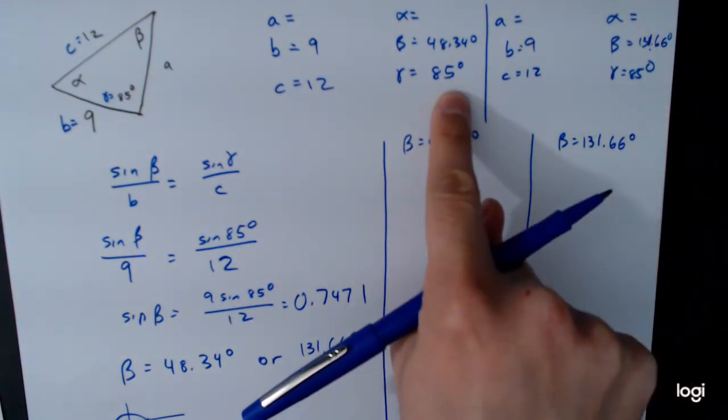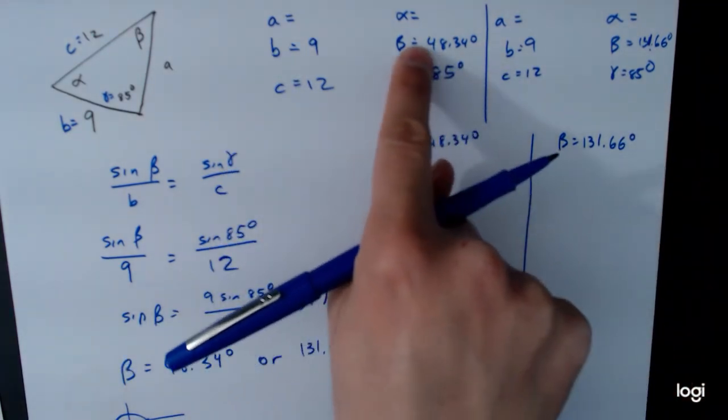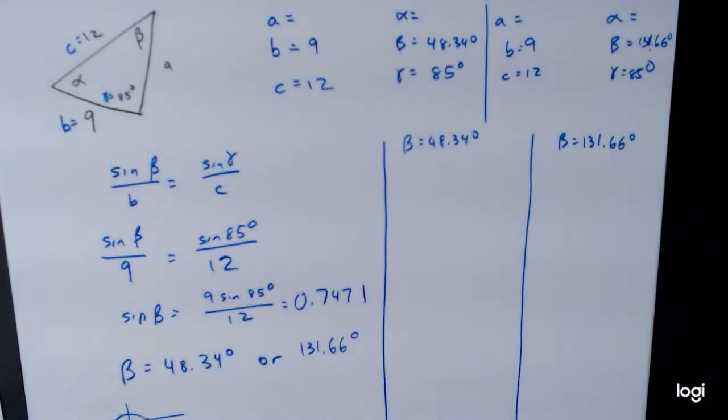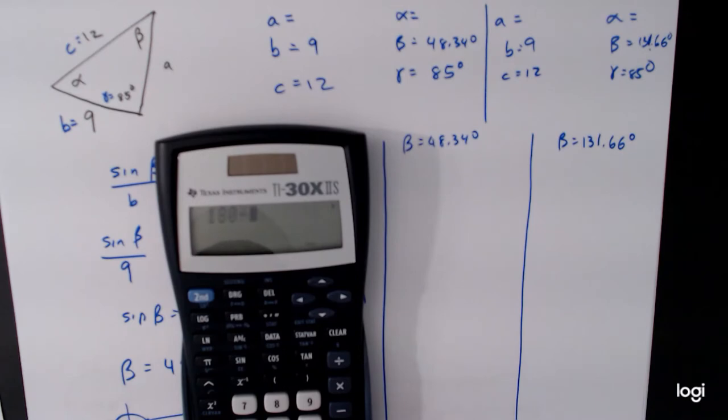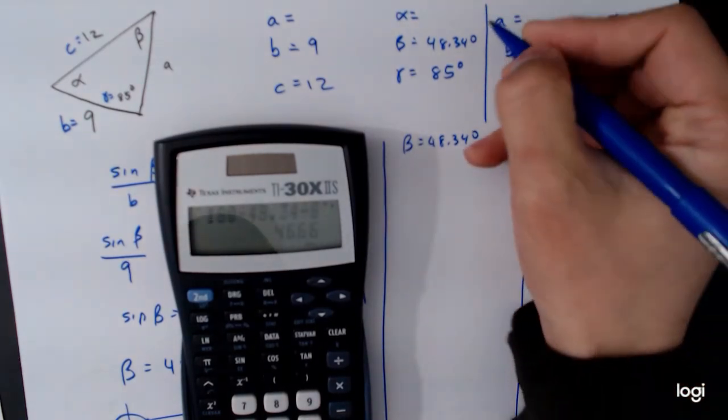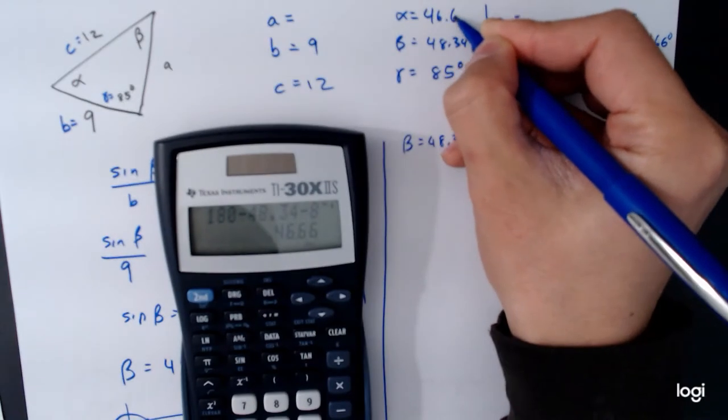Well if we look at our chart of values here, we can quickly pick out that we now have enough information to get alpha. So 180 minus 48.34 minus 85 is equal to 46.66 degrees.